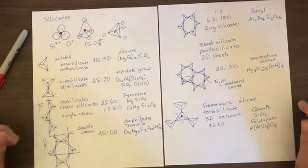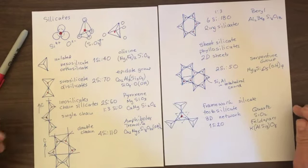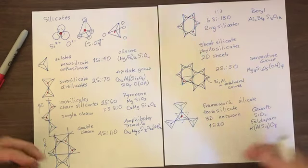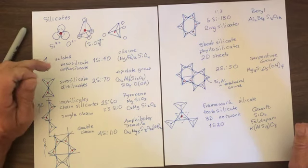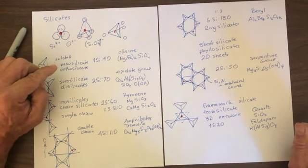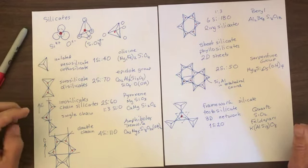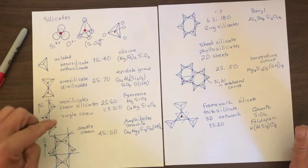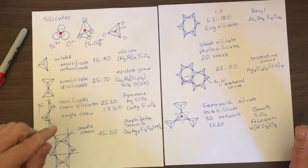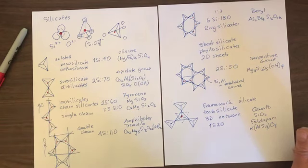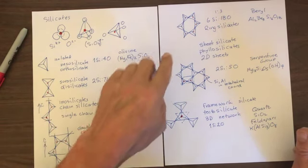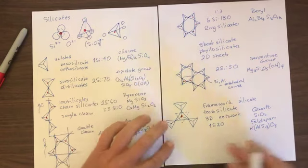In summary, silicate minerals are classified based on how many silica tetrahedra are linked. They go from isolated tetrahedra of nesosilicates, to doublets, to single chains, double chains, ring silicates, sheet silicates, and finally to 3D framework silicates.